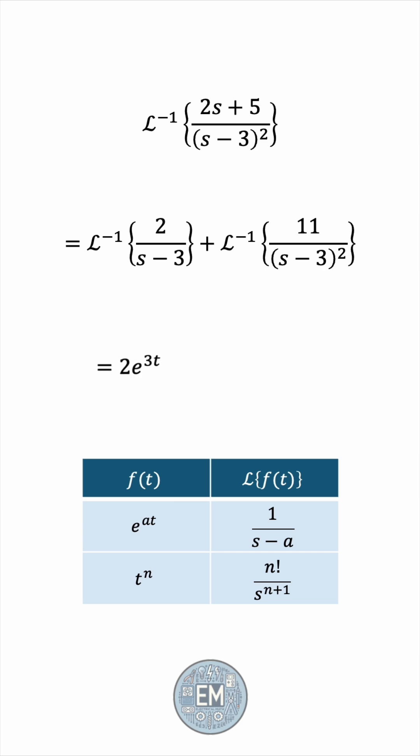The second one is reminiscent of t to the power of 1, because t will give us s squared in the denominator. If we take the 11 outside, again linearity, 1 over s squared would have an inverse Laplace of just t.